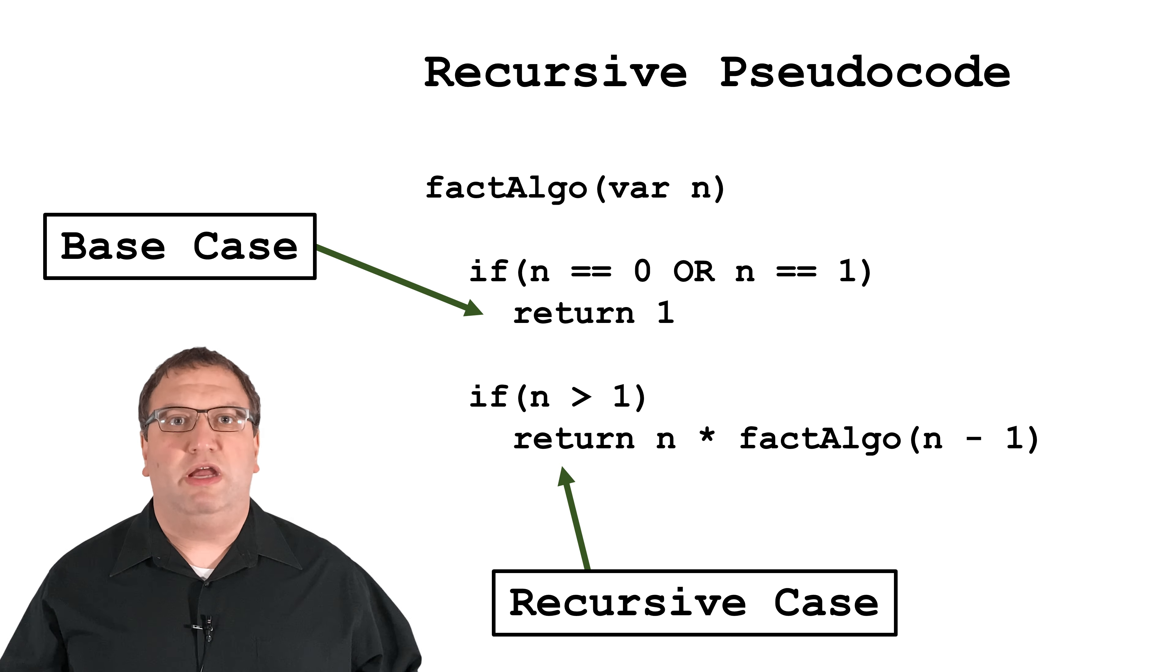When we calculated 3 factorial, that resulted in 3 calls to our method, fact-algo. We were in no danger of running out of memory there.